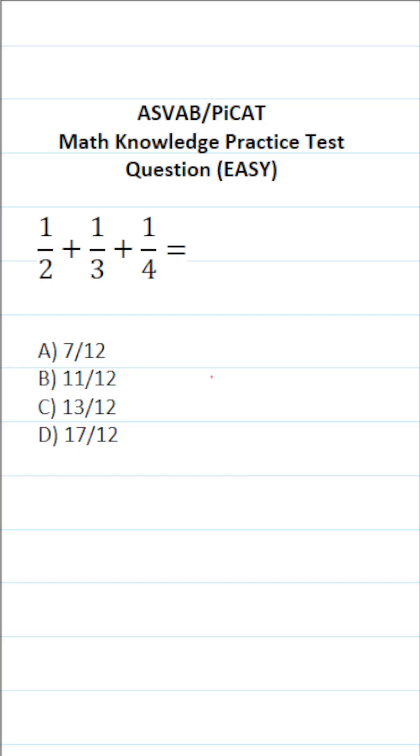This math knowledge practice test question for the ASVAB and PICAT says one-half plus one-third plus one-fourth equals. So for this problem, we're going to be adding one-half, one-third, and one-fourth.